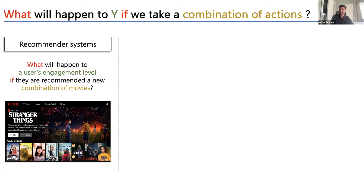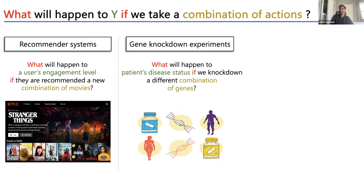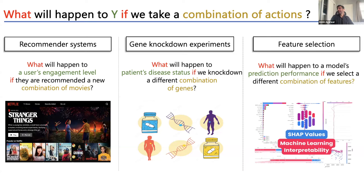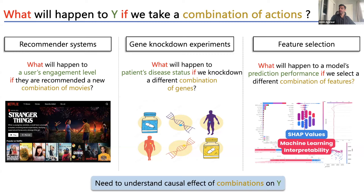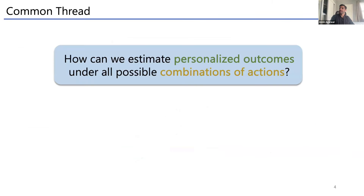For example, on Netflix's landing page they don't just show you one movie — they show you a collection together. In ML, if you play with LangChain there are thousands of things you can tune. The common thread: you want to learn personalized outcomes under all combinations of actions — that's the goal of this talk.